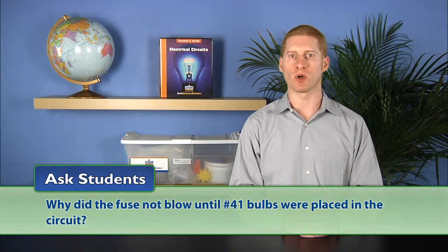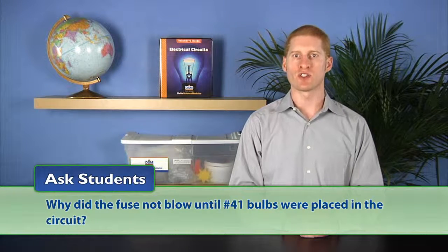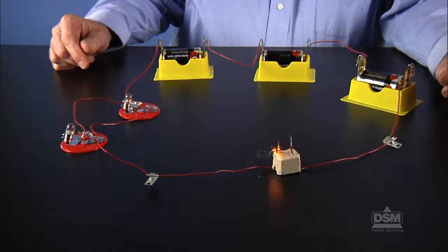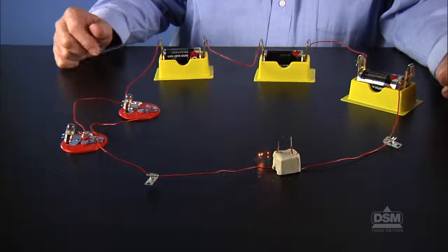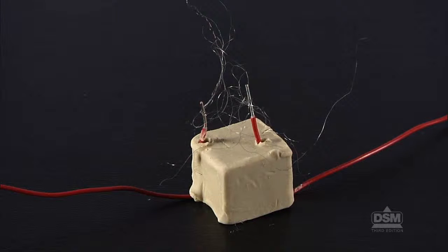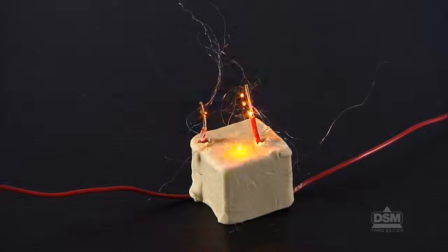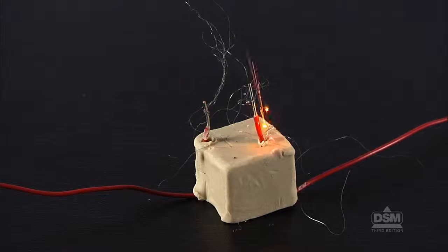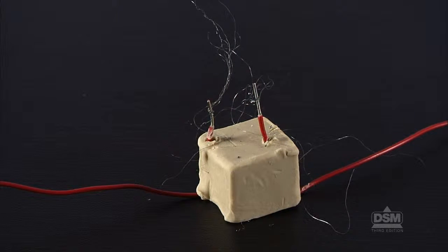Ask students, why did the fuse not blow until number 41 bulbs were placed in the circuit? Students should have observed number 41 bulbs allowed more current to pass than did the number 48 bulbs. In fact, the number 41 bulbs allowed more current to flow than the steel wool strand could handle, and that caused the steel wool to break, or rather, caused the fuse to blow.